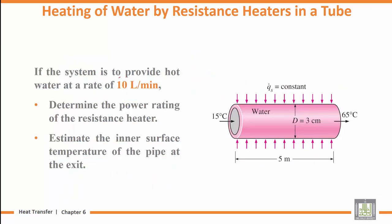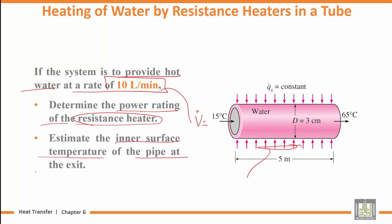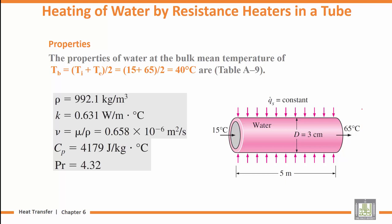If the system is to heat water at a rate of 10 liter per minute, determine the power rating of the resistance heater. Also, estimate the inner surface temperature of the pipe at the exit. We know T exit for the bulk temperature, but need to find T_s at the exit.